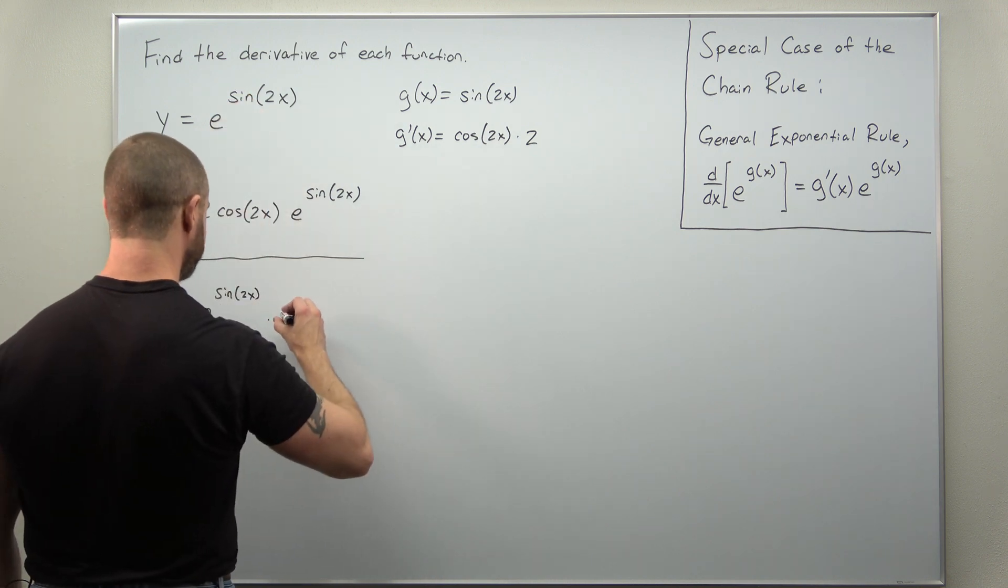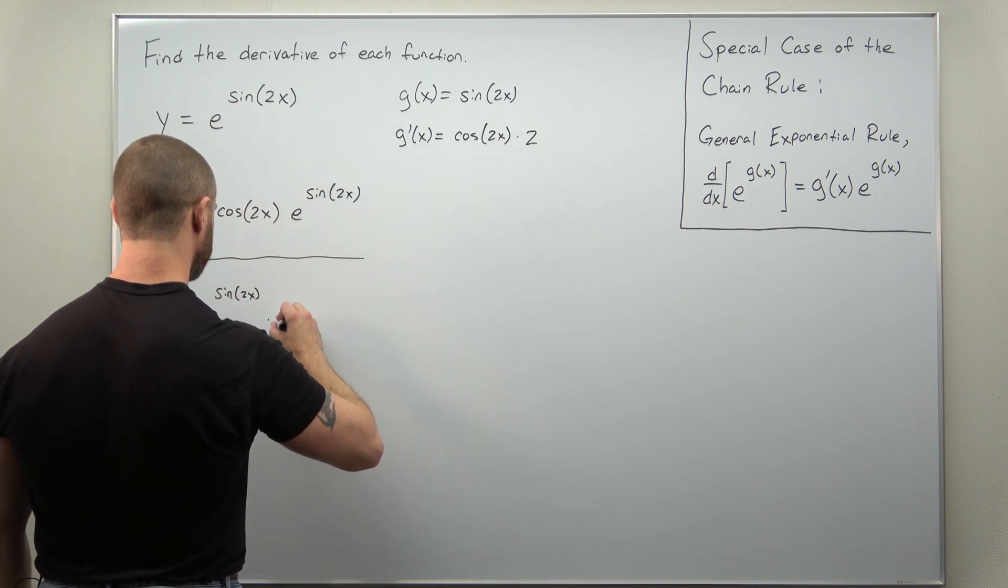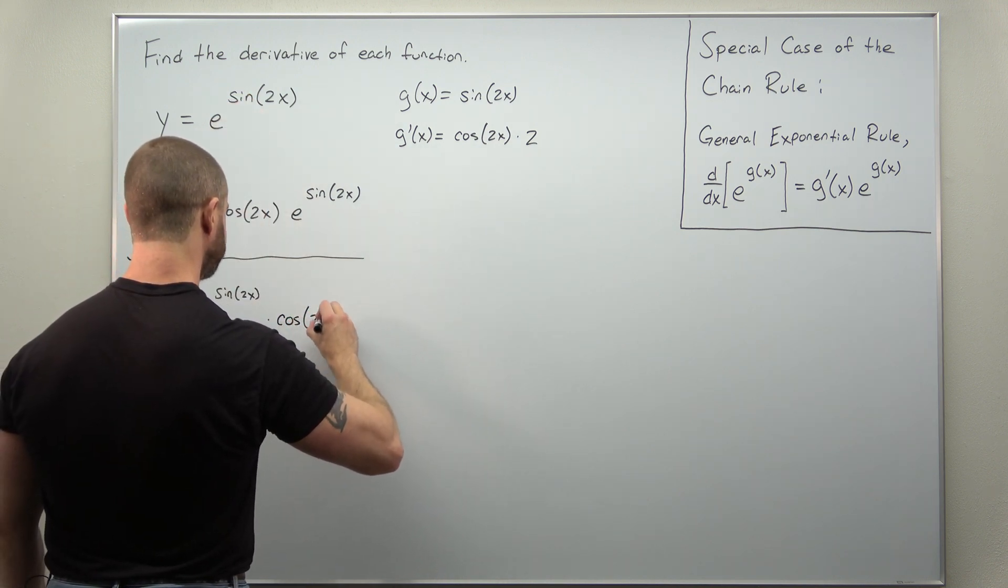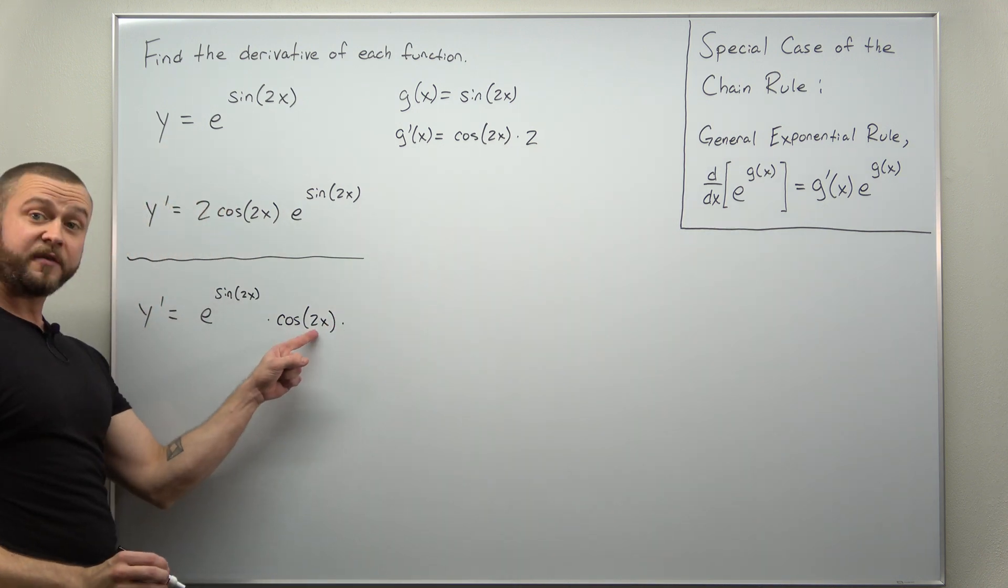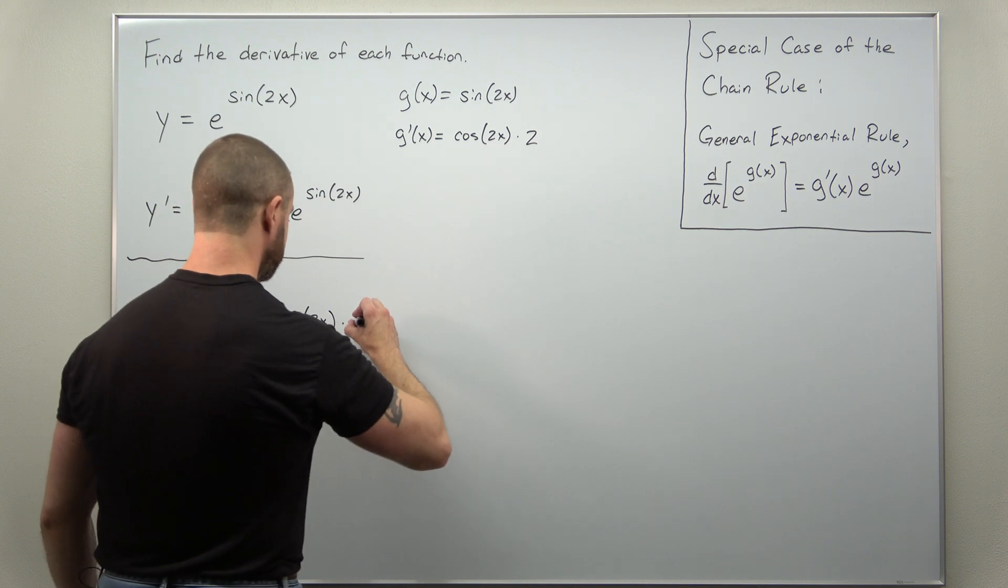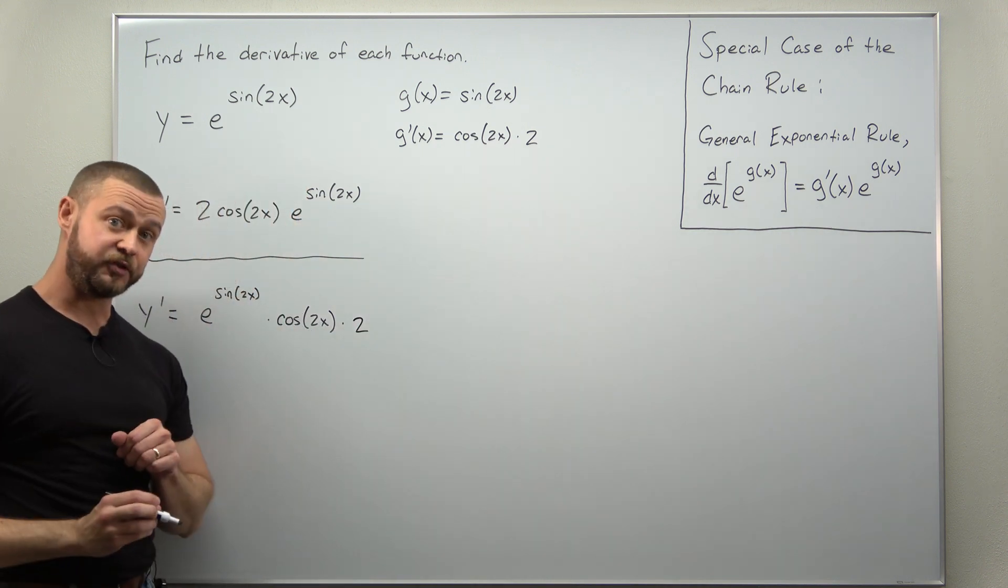We're applying the chain rule again. The derivative of the outer function here, sine, is cosine. We keep the inner function the same, and then we multiply now by the derivative of this inner function, which again comes out to 2.